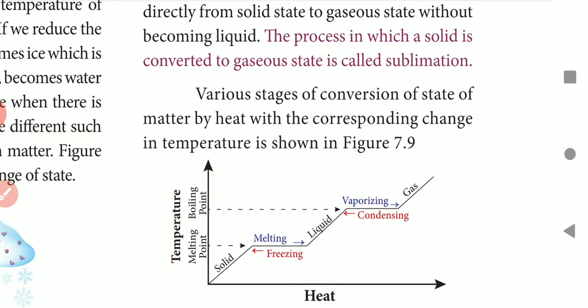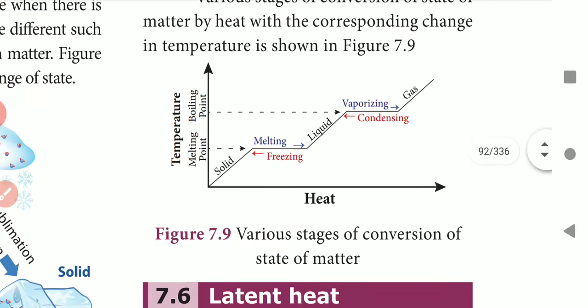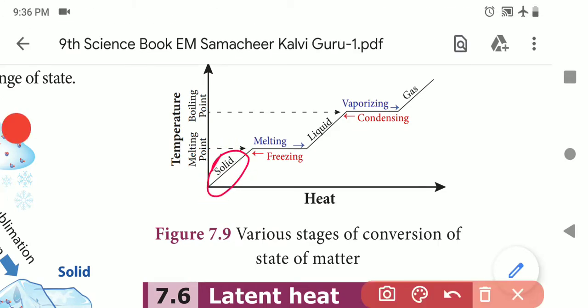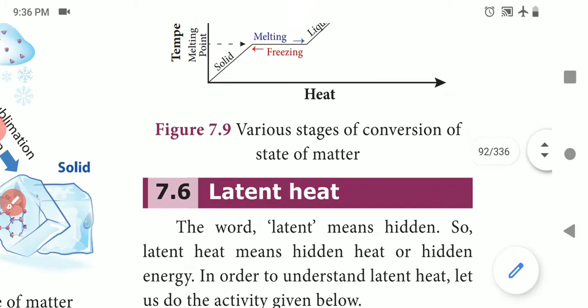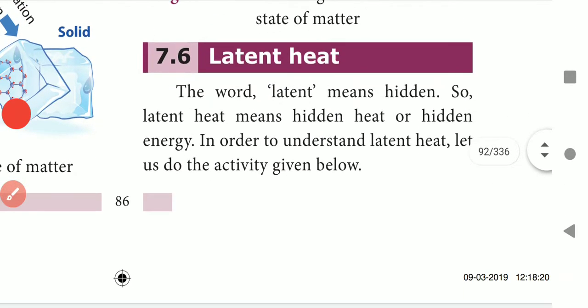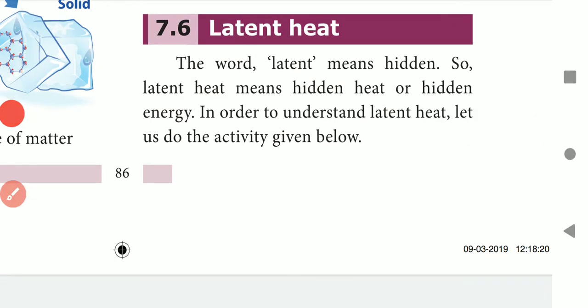In the graph you can see the various stages of conversion: first a solid melts to liquid, then the liquid vaporizes to gas. The reverse process: gas condenses to liquid, and liquid freezes to solid. Next is latent heat.